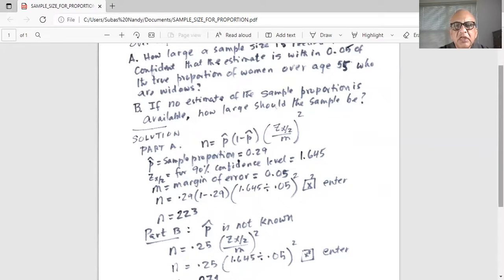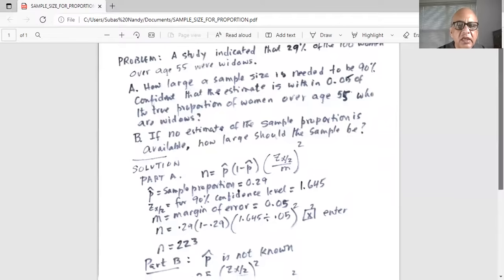Close the parenthesis then we need to square that last parenthesis. So we press the x square button which is in the first column of keys on the extreme left, halfway down. Press that x square that ensures that the last parenthesis is squared and then hit enter and we always round it up. So the sample size is 223. So that's part a.